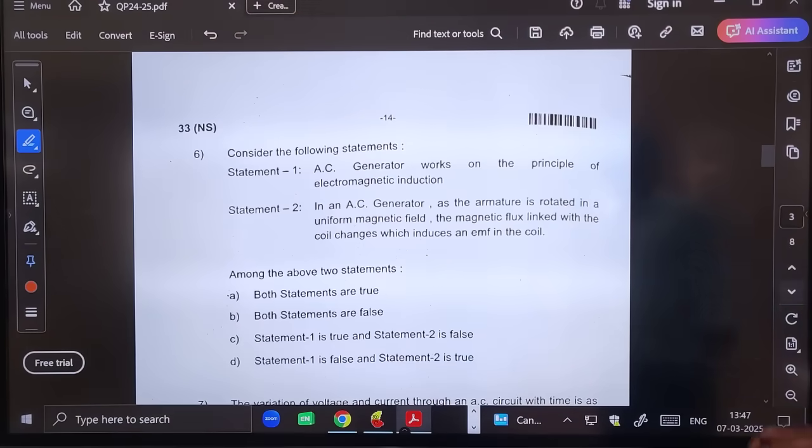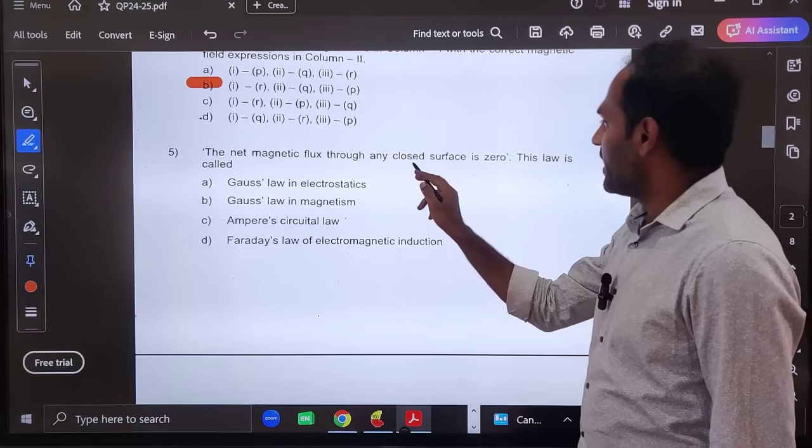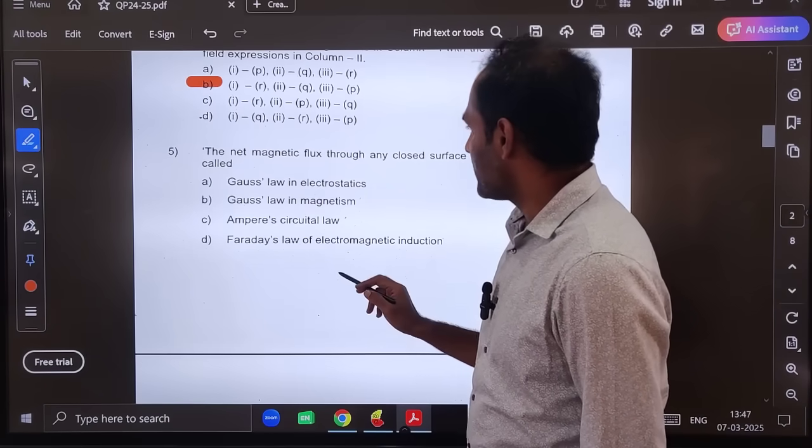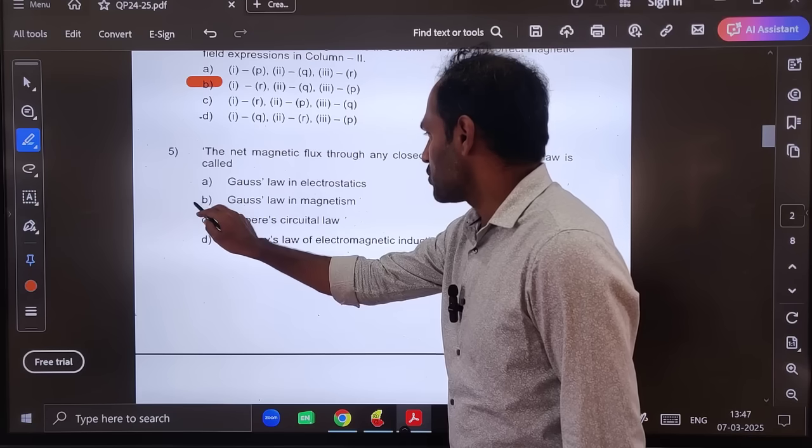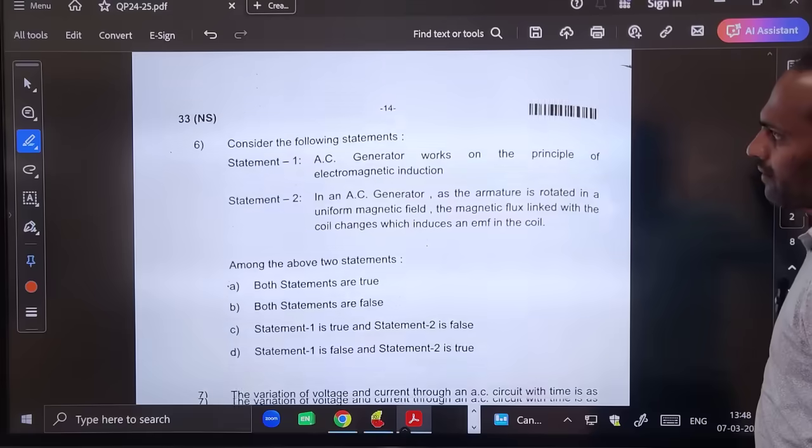Fifth question: the net magnetic flux through any closed surface is zero. So this law is called Gauss law in magnetism. Magnetic flux, so Gauss law in magnetism.